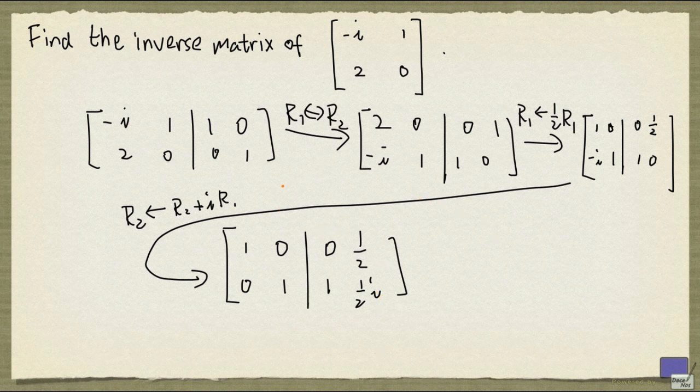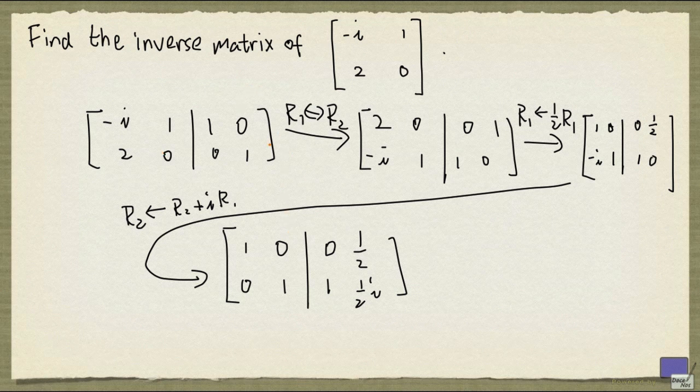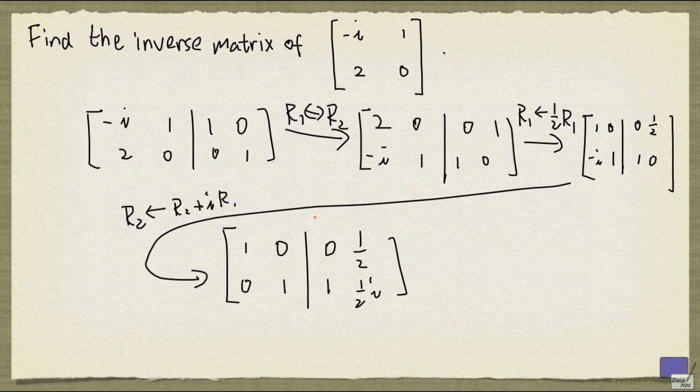So this example illustrates two things. First, the process of finding the inverse matrix of a matrix with complex entries. And the second is the choice of elementary operations that you perform has an impact on the total number of calculations that you need to perform.